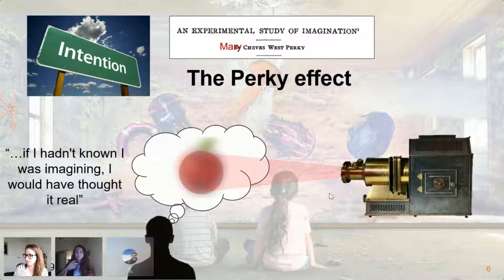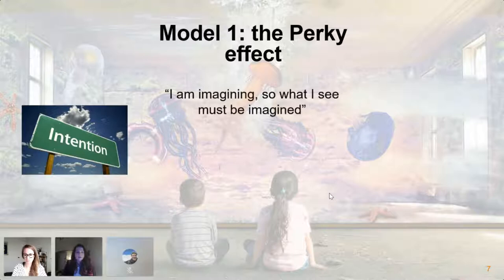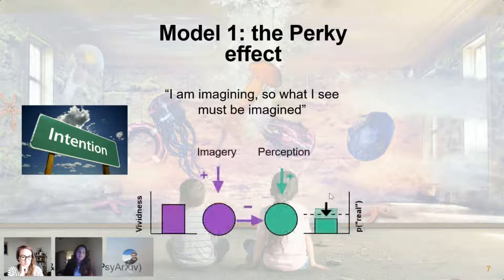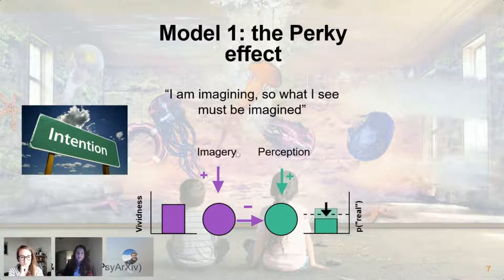So the idea is that congruent sensory input is explained as being the result of imagery. We tried to model this in a very simple signal detection model, capturing the intuition that when you're imagining, anything in line with what you're imagining is explained away as caused by yourself. We have two different signals — an imagery signal and a perception signal — both modeled as two-dimensional Gaussians. The important feature is the suppressive connection between imagery and perception such that when the content is the same, the probability of detecting an external stimulus is reduced because it's explained away by imagery.